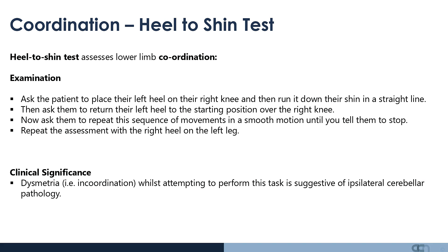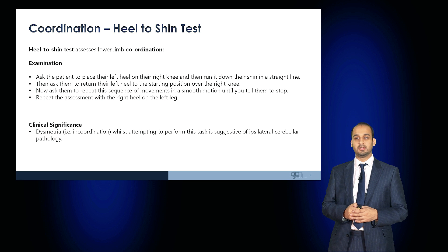Move on to examine coordination. The heel to shin test is a good way of assessing lower limb coordination: ask the patient to place their heel over the opposite knee, run it along the shin in a straight line, and repeat. If this is impaired or they are dysmetric, this suggests ipsilateral cerebellar pathology.